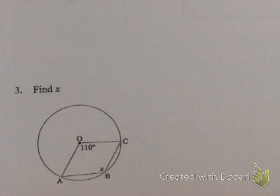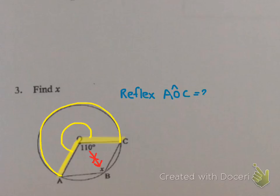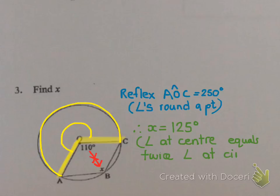Right, on to our last example. Our last example also confuses people. Because people think the 110 is related to X. But exactly the same as example 2, we have arc AC and it produces a reflex angle at O. And this reflex angle is what is related to X. Now how do I find this reflex angle? Well reflex angle AOC would be 250 degrees. How did I get that? Because my angles around a point will add to 360. Now this means I can determine the angle for X. Because my angle at my center equals twice my angle at circumference. So X is 125.